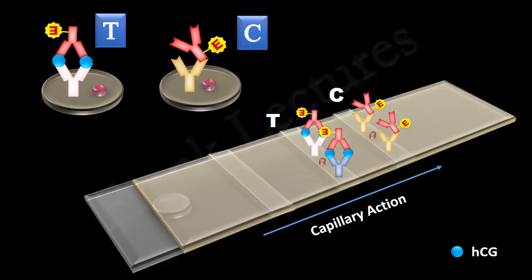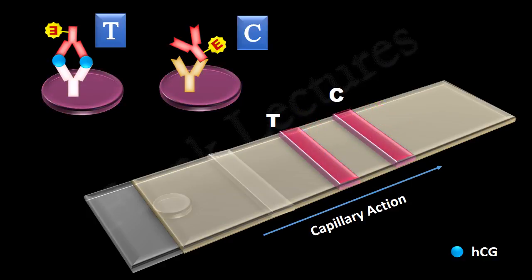Now, look at the test and control zones. Both zones have inactive dye molecules, and in both cases enzyme-conjugated antibodies are also present. The enzyme will act on the inactive dye molecule, and on activation, this dye will result in color development. Thus, both lines — that is, the T-zone line and C-zone line — will be colored. This is a positive test.